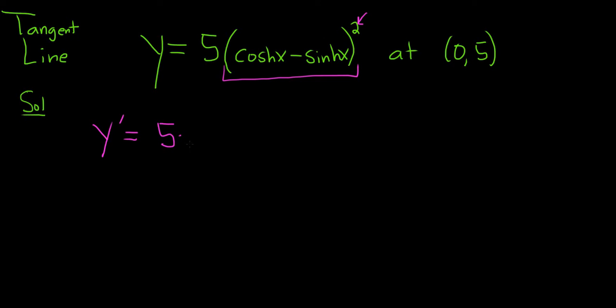So we're going to put the 2 in the front, leave the inside piece untouched, so cosh x minus sinh x. We'll subtract 1, so you put the 2 in the front, subtract 1, and then times the derivative of the inside function.